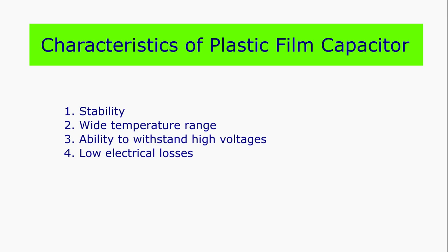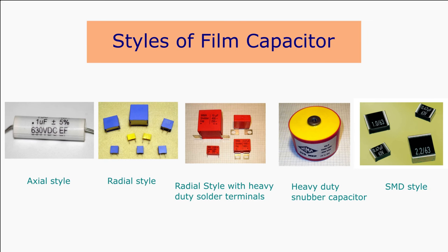The typical capacitance value for the plastic film capacitor is around 100 picofarads up to several microfarads. These capacitors are available in different styles such as axial style for point-to-point and through-hole mounting, radial style for through-hole solder mounting, radial style with heavy-duty solder terminals, heavy-duty snubber capacitor, and SMD style for PCB mounting.